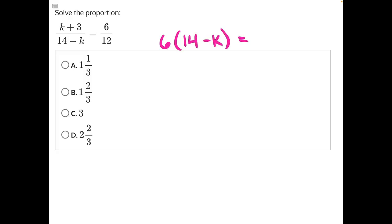That equals the cross-multiplication of 12, our denominator on the right-hand side, and the numerator on the left-hand side, 12 times (k + 3).